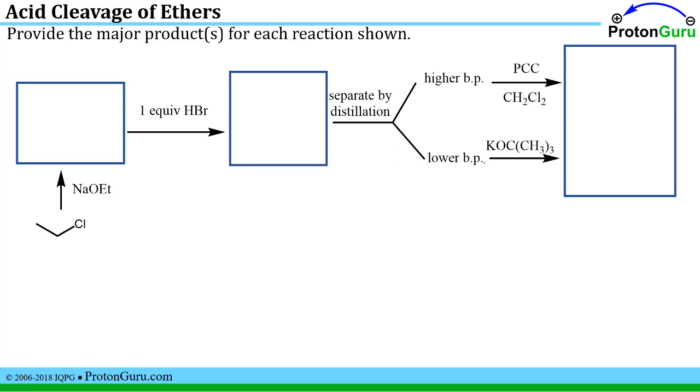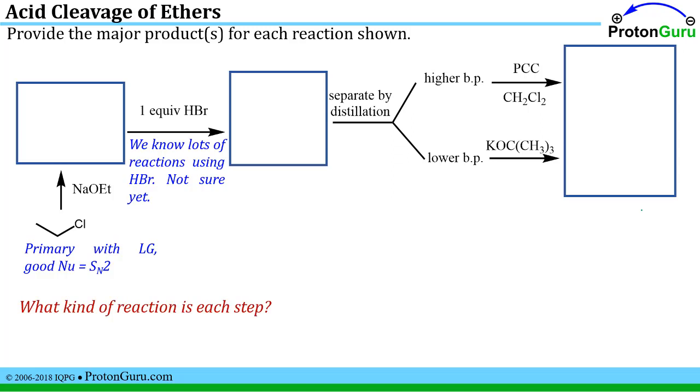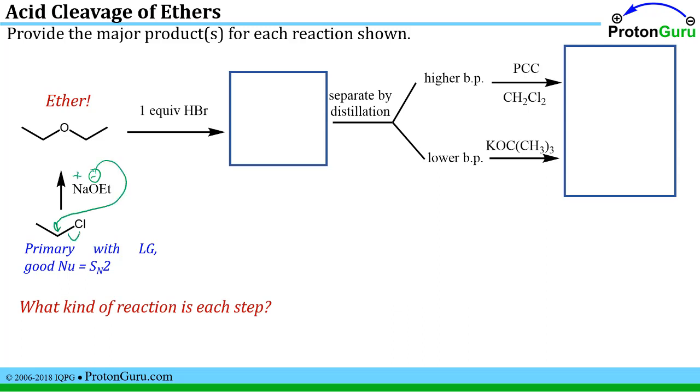Now we can start to incorporate our knowledge of acid cleavage of ethers into these string problems as we've seen in some of the more recent videos. To address these types of problems, we try to figure out what kind of reaction is happening in each of these steps. If we look at the first step, we see a good leaving group on a primary carbon and the reactant has a good nucleophile once this ionic compound dissociates. That should be an SN2 reaction. We can't, without knowing what this material is in this box, really figure out what the HBr is going to do. We know a lot of different reactions that would use HBr as a reagent, so let's hold off on that for now. Just do the first step. We'll do the SN2 reaction where this negatively charged nucleophile displaces the chloride.